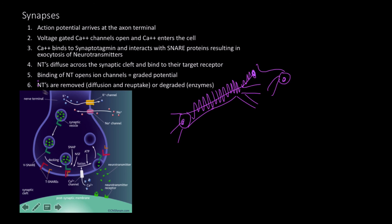That graded potential can be either depolarizing or hyperpolarizing. The neurotransmitters are ultimately removed by diffusion, by reuptake back into the presynaptic cell, or by enzymatic degradation via enzymes on the receptor cell's surface.